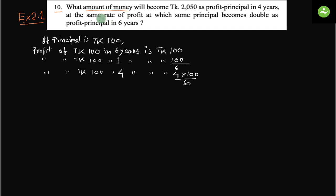We also have to find out the rate of profit. If we find out the rate of profit, we can find out the principal. So if the principal is Taka 100, the profit of Taka 100 in six years is Taka 100, because the profit-principal will double.